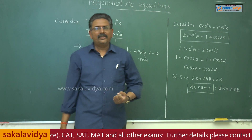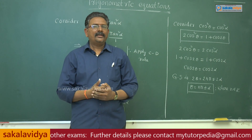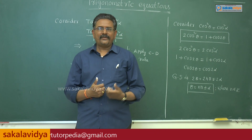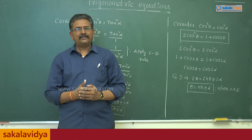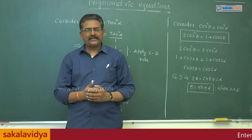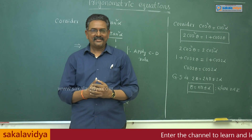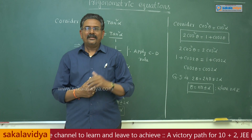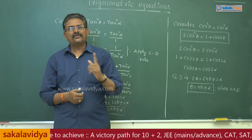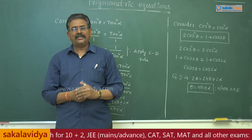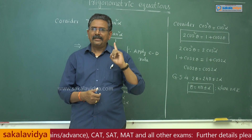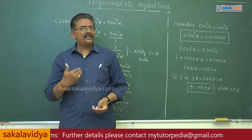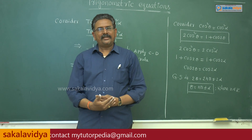Now let us summarize. If sin theta equal to sin alpha, theta equal to n pi plus or minus alpha. For tan theta equal to tan alpha, theta equal to n pi plus alpha. Whereas for sin square theta equal to sin square alpha, cos square theta equal to cos square alpha, and tan square theta equal to tan square alpha, we have only the general solution theta equal to n pi plus or minus alpha. In this way, we can summarize all the generalizations of trigonometric equation formulas.